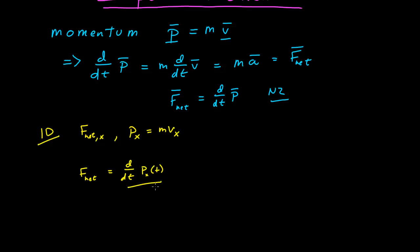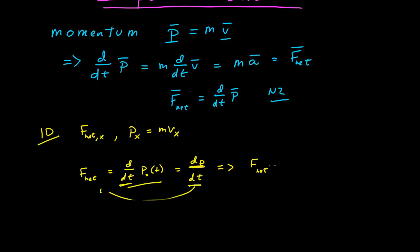I'm going to rewrite this in what I've written as an operator form — we're operating on the momentum to take the derivative. I'll rewrite it as the ratio of two differentials: dp divided by dt. Assuming my functions are well-behaved so that condition is satisfied, I can bring dt to the other side, and I get the net force times the time differential is equal to the momentum differential.